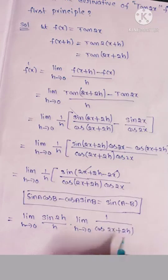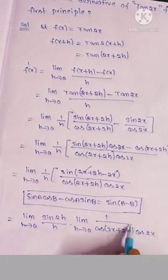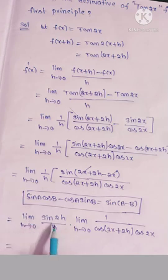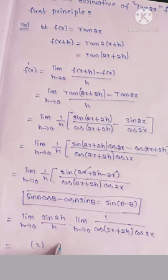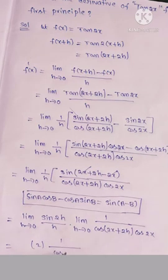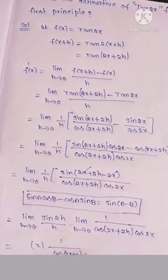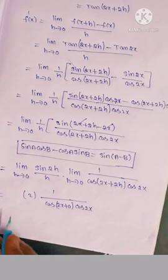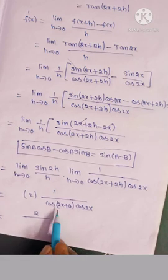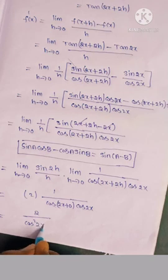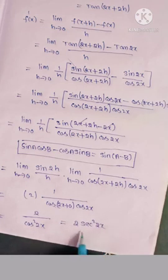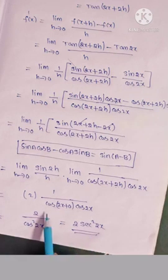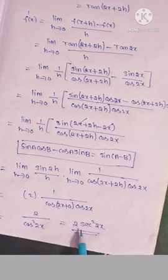So the remaining term: sin 2h by h, limit h tends to 0, and the denominator is 1 by cos(2x plus 2h) into cos 2x. sin 2h by h gives 2 as limit. Applying h equals 0: 2 into 1 by cos 2x into cos 2x, which is 2 by cos squared 2x, so 2 secant squared 2x.